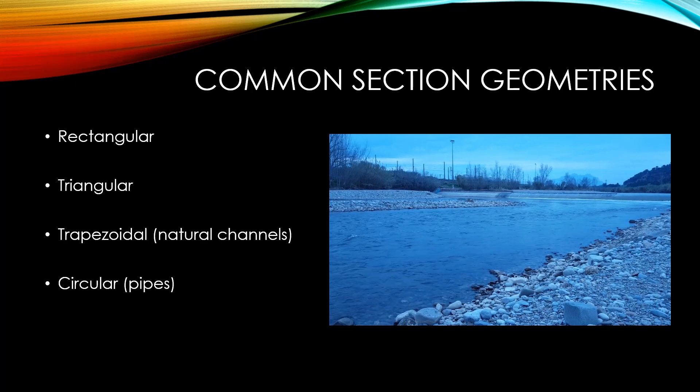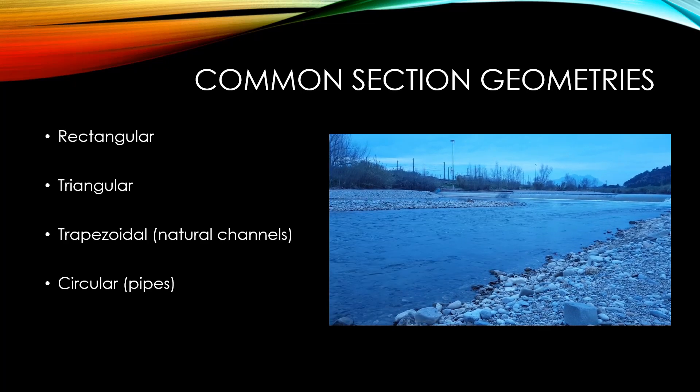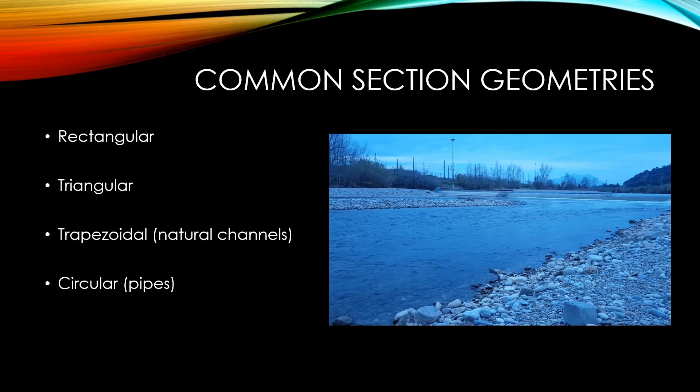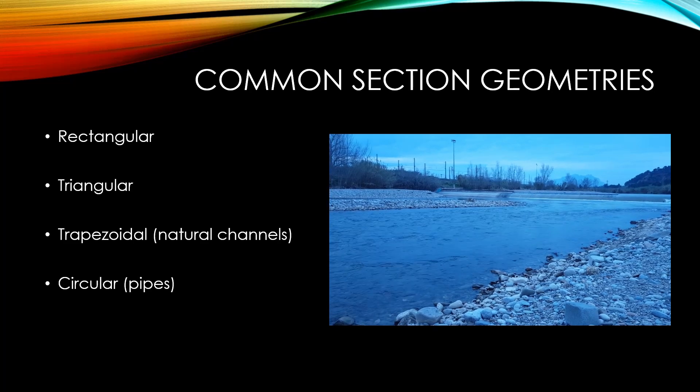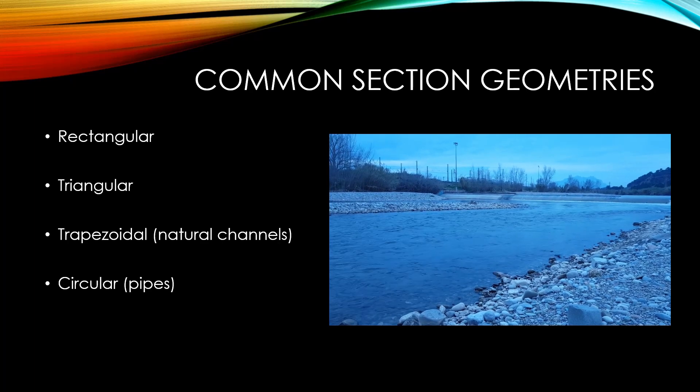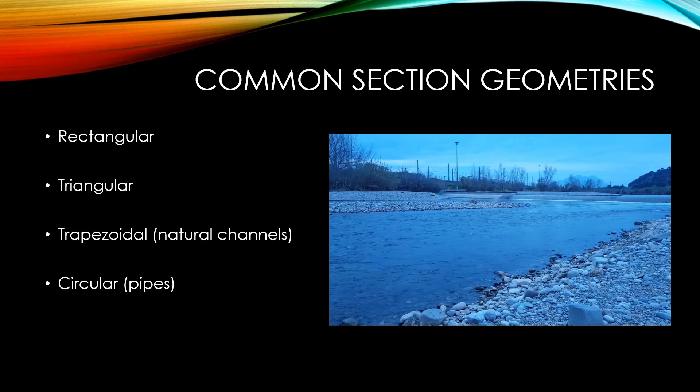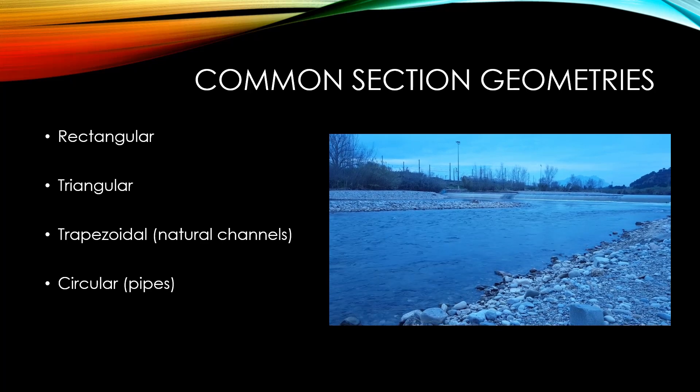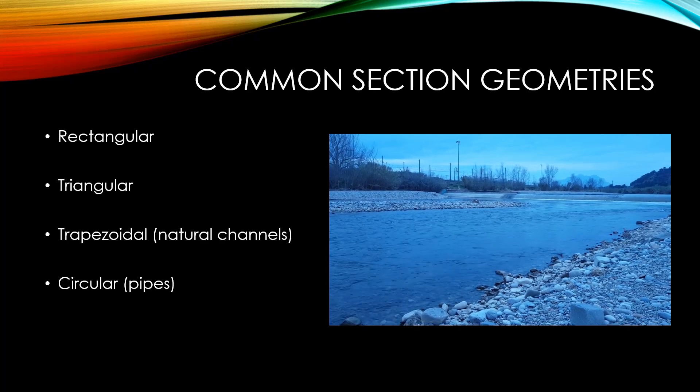Rectangular and triangular cross-sections are usually reserved for man-made channels. Trapezoidal channels are also used in man-made channels, but they can also be used as a simplification of natural channels. Circular sections are usually reserved for use in pipes.